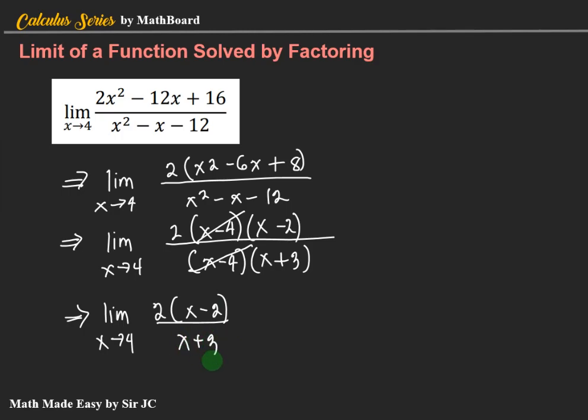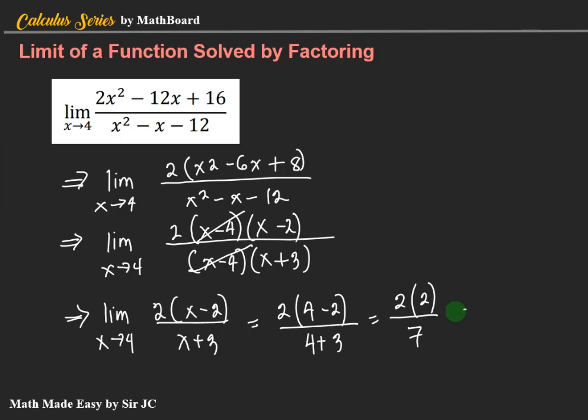We can now substitute x equals 4: 2 times 4 minus 2 over 4 plus 3. That is 2 times 2 over 7, which is 4 over 7. So the limit of the given function is 4/7. Checking: x minus 4 cancels, giving 2 times x minus 2 over x plus 3. Replace x by 4: 4 minus 2 is 2, times 2 is 4, and 4 plus 3 is 7. The answer is correct.